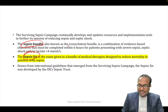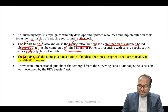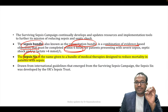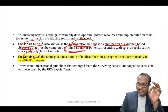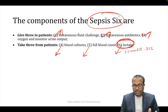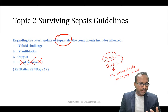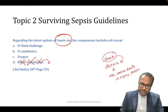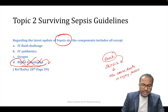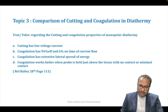Blood transfusion has no role in septic shock — it is only used in hemorrhagic shock. So blood transfusion is not part of the Give 3/Take 3 sepsis bundle. That is the answer: D. This is the second update from the new Bailey.